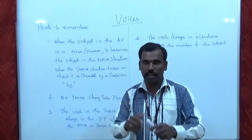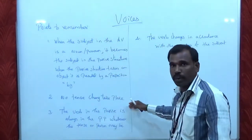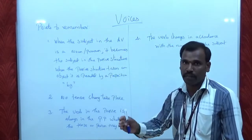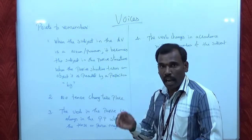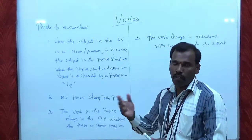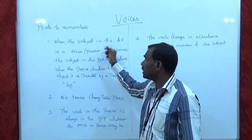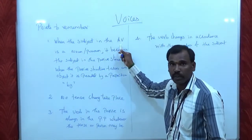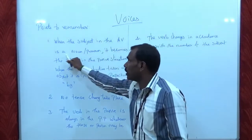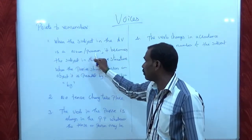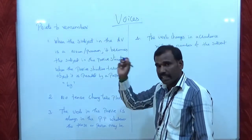Before going into the subject, I would like to tell you that there are four major points that should be focused on by everyone to understand what Voice is and how Passive Forms are formed. Point number one: when the subject in the active voice — AV stands for active voice and PV stands for passive voice — is a noun or pronoun, it becomes the subject in the passive form.